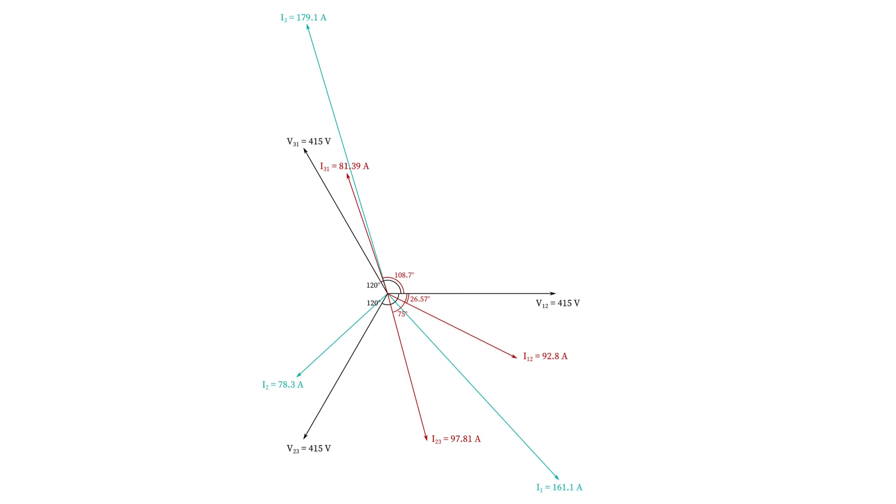So I hope you found this video useful first of all on how we can calculate the phase currents and the line currents in an unbalanced delta network that's made up of complex impedances as has been the case in our example, but then also how we can represent those on a phasor diagram and sort of visualize the imbalance that we see in this delta network.